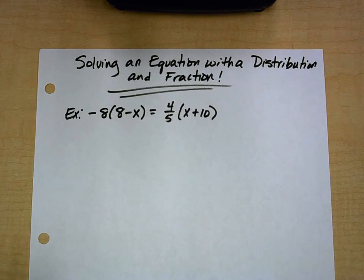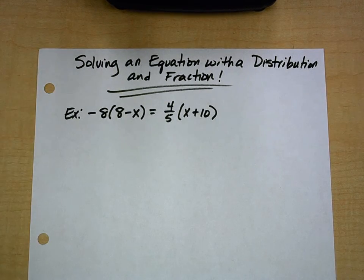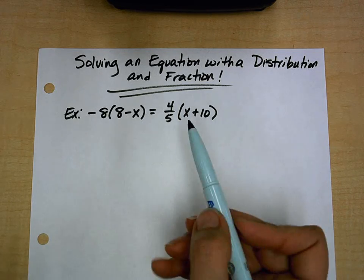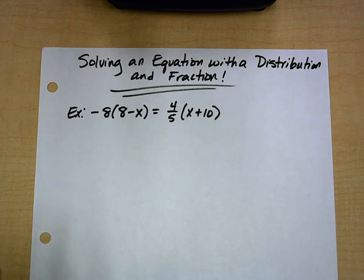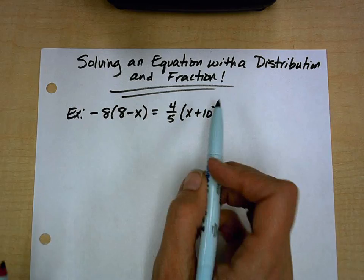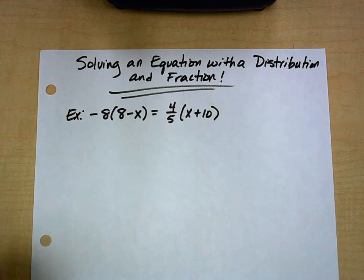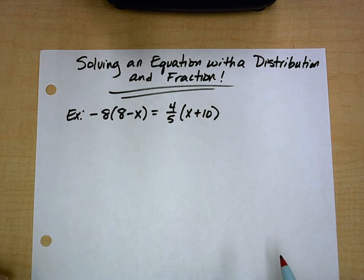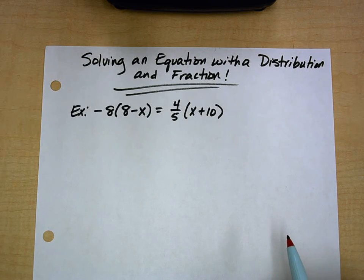In this example, I'm going to solve an equation that has a distribution and a fraction. What I want to do is clear the fraction first so that I don't have to try and distribute this 4 fifths into the x plus 10. And so I need to multiply by a least common denominator to do that.